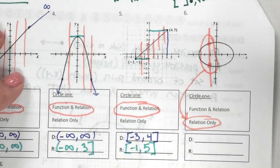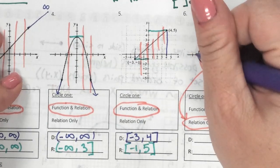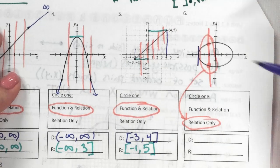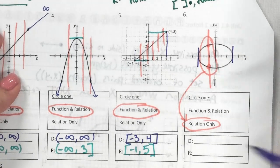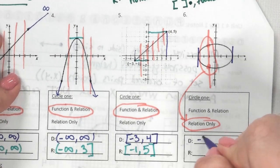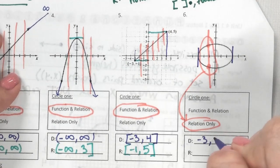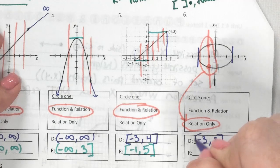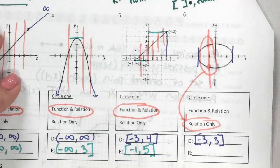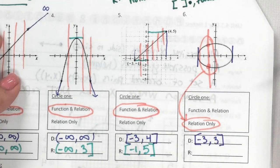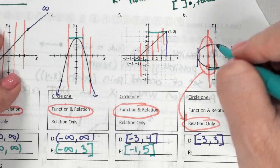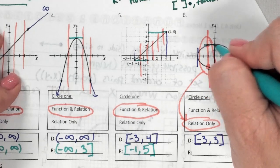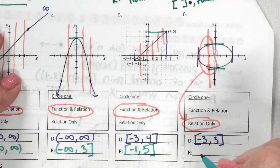The circle is the same way. The farthest left is negative 3 and the farthest right is positive 3. The lowest it goes is negative 2 and the highest it goes is positive 2.